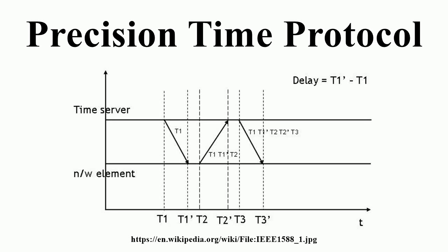The Precision Time Protocol is a protocol used to synchronize clocks throughout a computer network. On a local area network, it achieves clock accuracy in the sub-microsecond range, making it suitable for measurement and control systems.